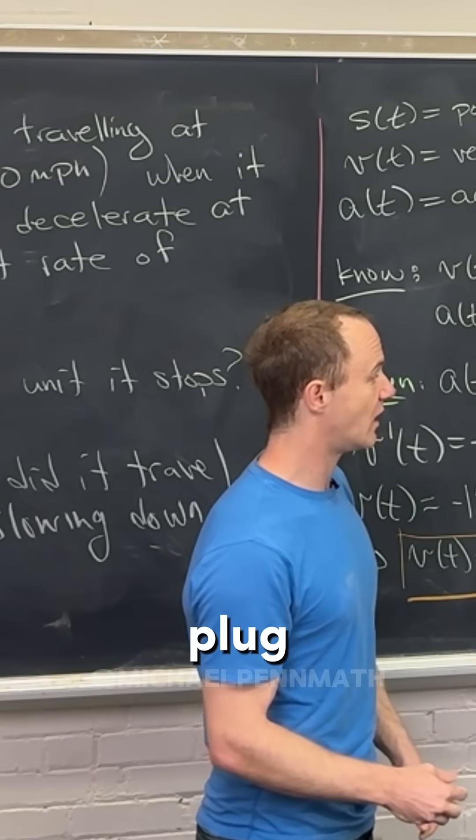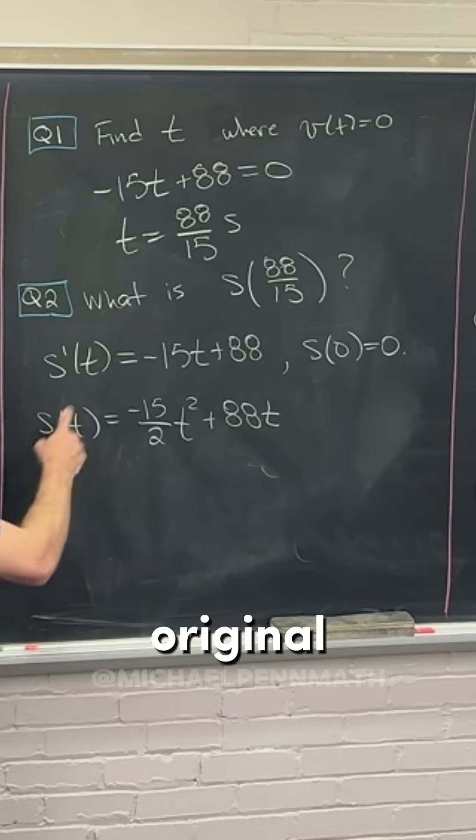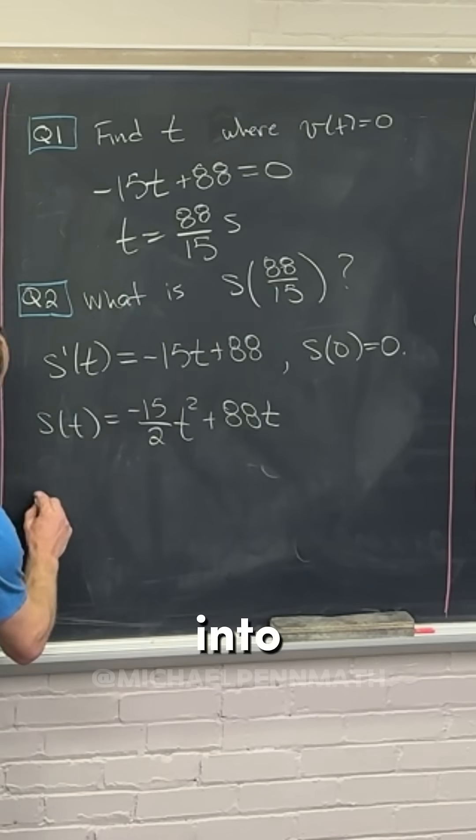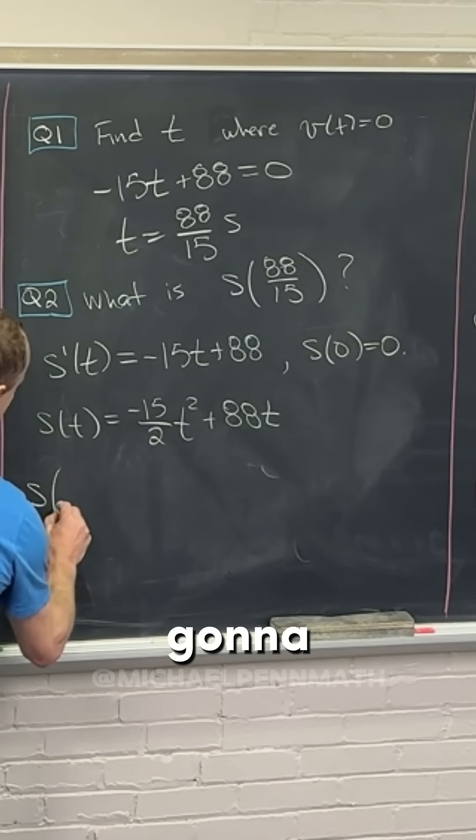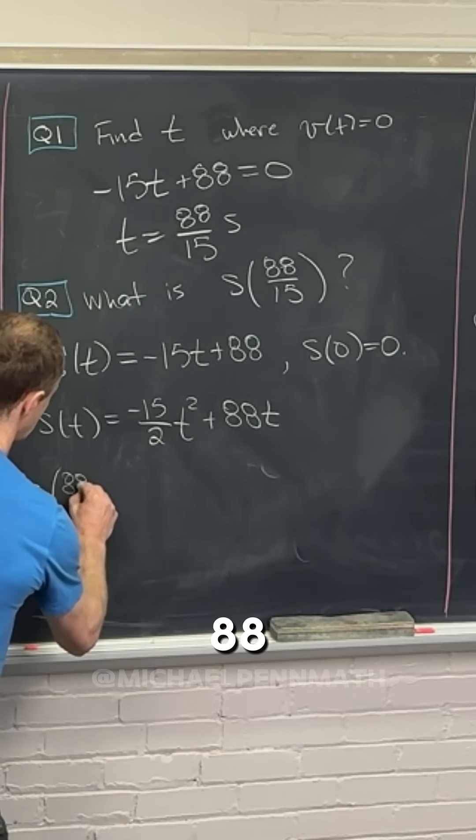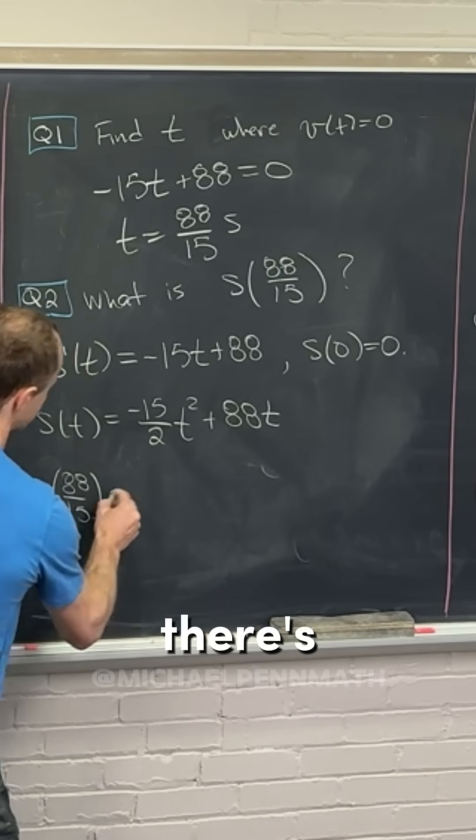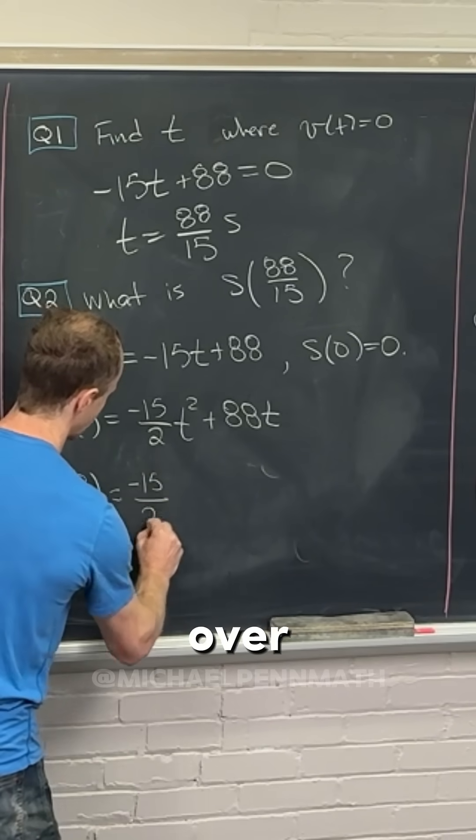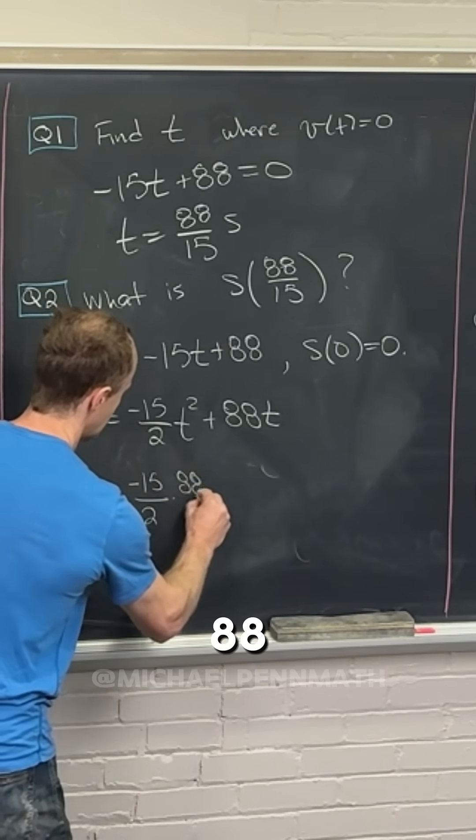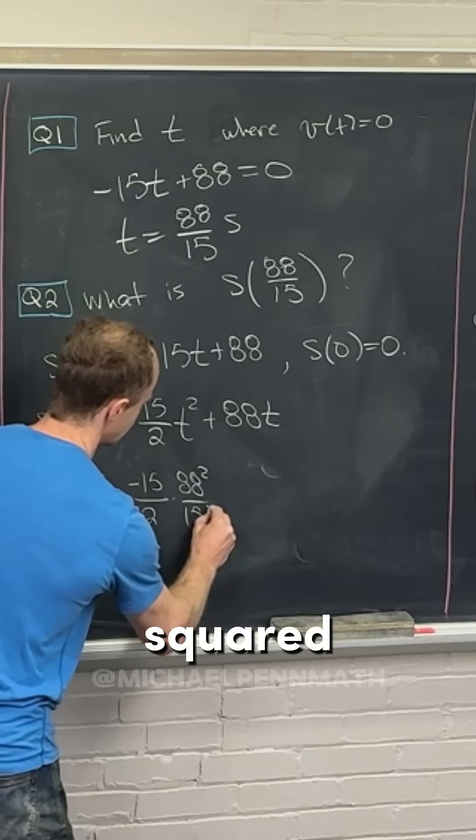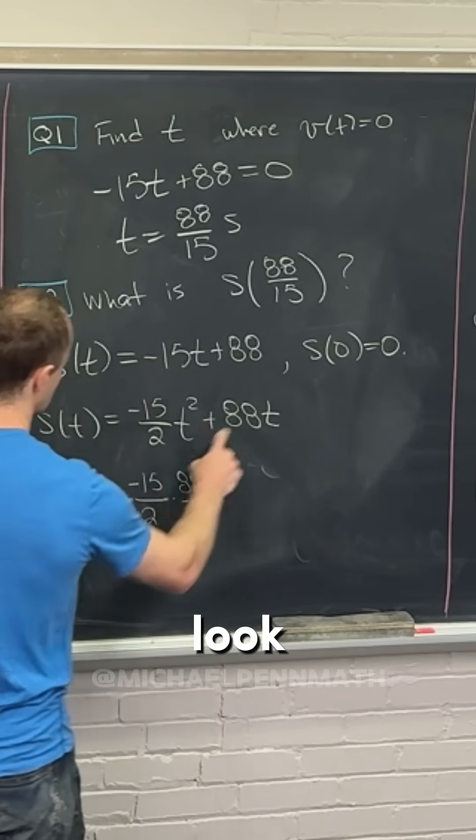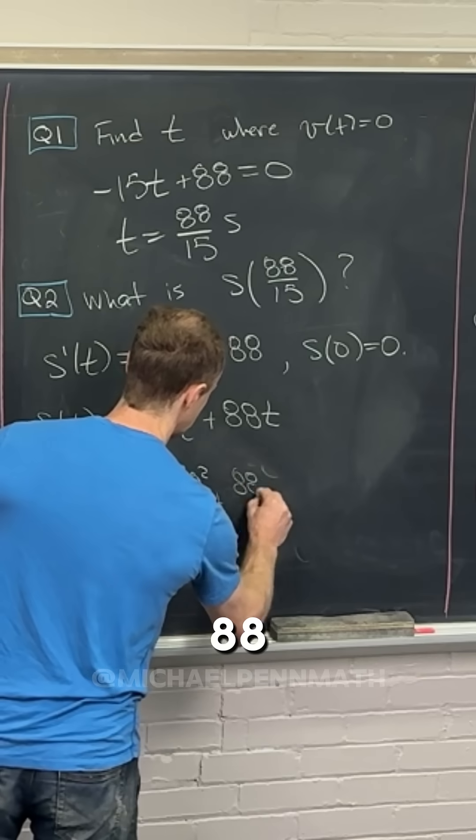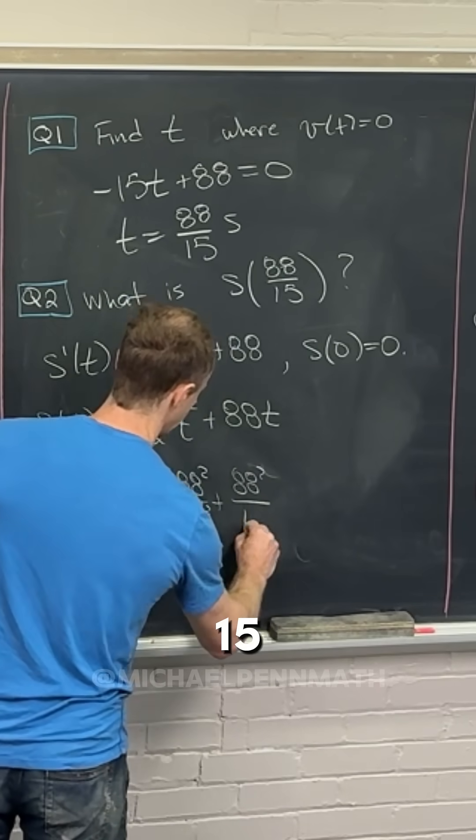We simply have to plug that into the original or plug 88 over 15 into this. So it's going to be S of 88 over 15. And then, I don't know, there's just like a little bit of work to do, right? So it's minus 15 over 2 times 88 squared over 15 squared plus, well, look, that's going to be 88 squared over 15.